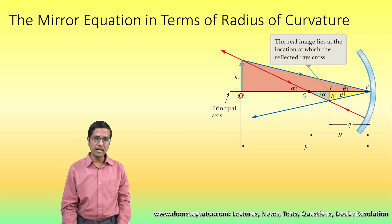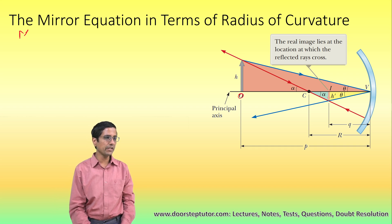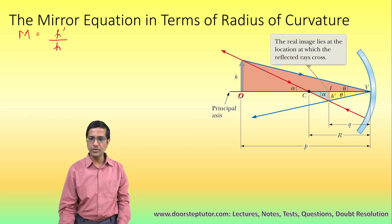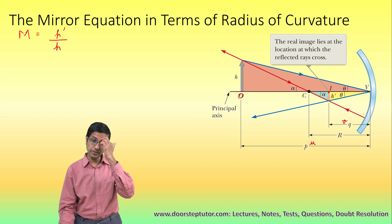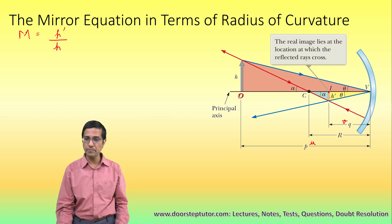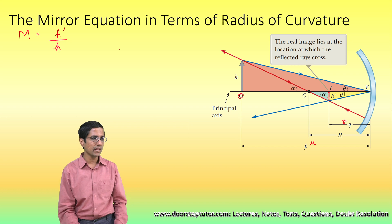We have placed an object O here, and the height of the object is H. The magnification of the object would be the height of the image divided by the height of the object. The image is formed at point I at a distance of V; the object is placed at a distance of U from the mirror. The height of the image is H dash — that is the setup.